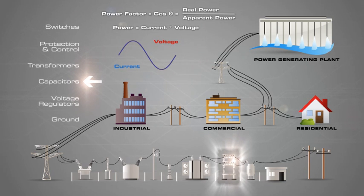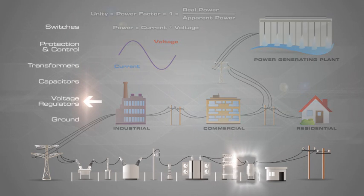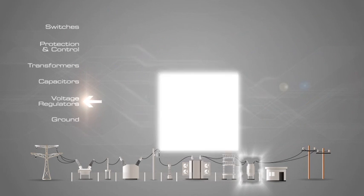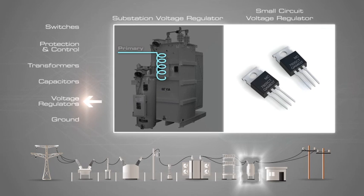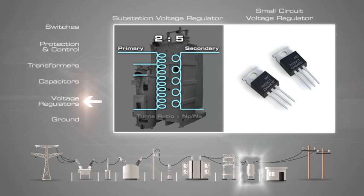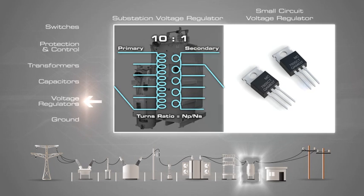The goal is to obtain a power factor of one, known as unity. When the grid is at unity, all of the power being created is being used as efficiently as possible. A voltage regulator is an electrical regulator designed to automatically maintain a constant voltage level. Voltage regulators may be installed at a substation or along distribution lines so that all customers receive steady voltage independent of how much power is drawn from the line.